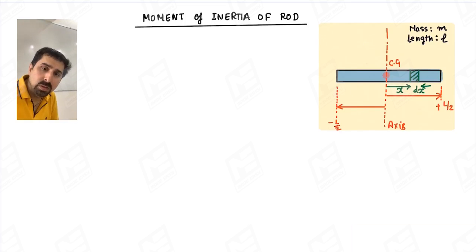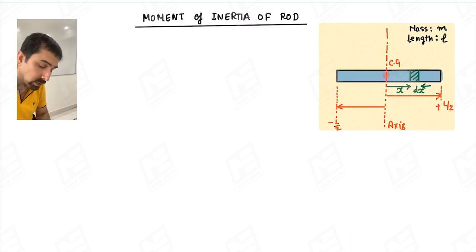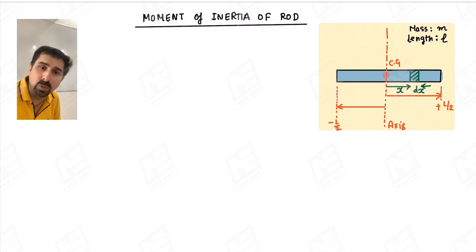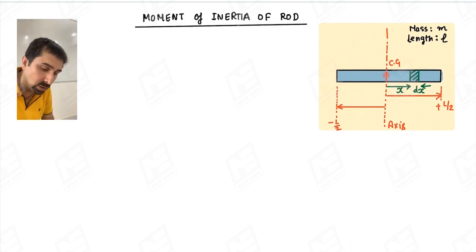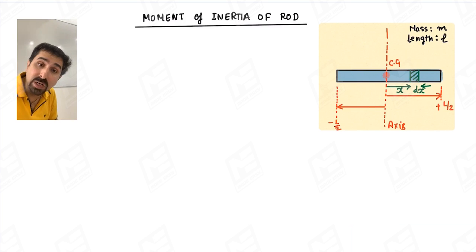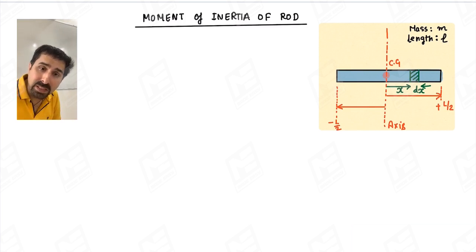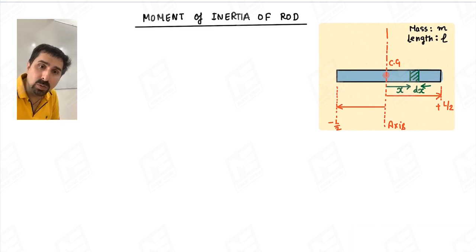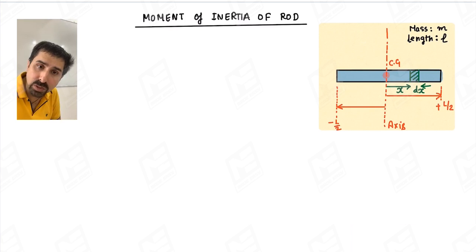Now, my dear students, today in this video I am going to talk about mass moment of inertia and standard objects of mass moment of inertia. The first object I am going to consider is a rod about an axis passing through its center and perpendicular to the rod.